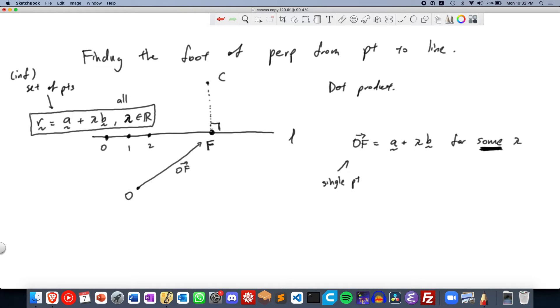But that's not just all the information we're given. So F is special in the sense that it lies on the line. But another special property of F is that CF is perpendicular to the line.